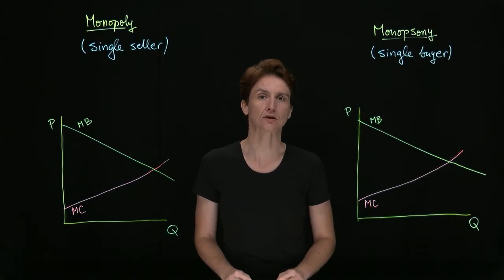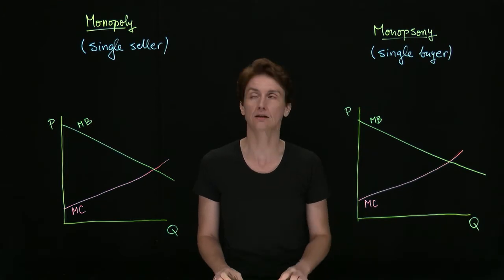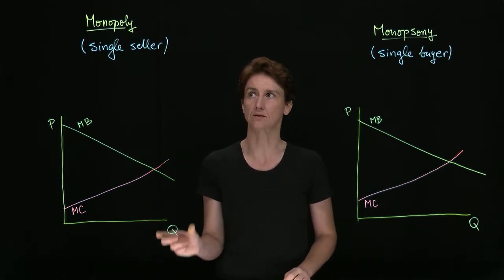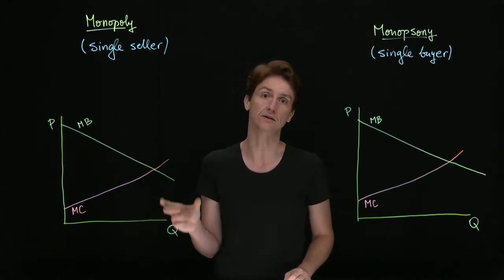In this video we're going to contrast the outcomes of a monopoly and the monopsony market. So a monopoly is a market with a single seller. We'll assume that there are many buyers, so it's competitive on the demand side.